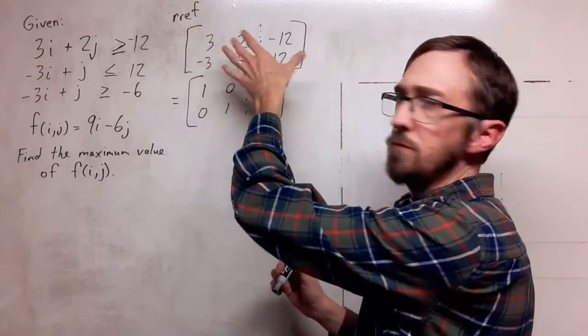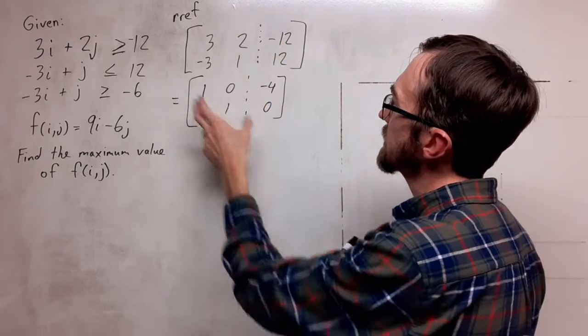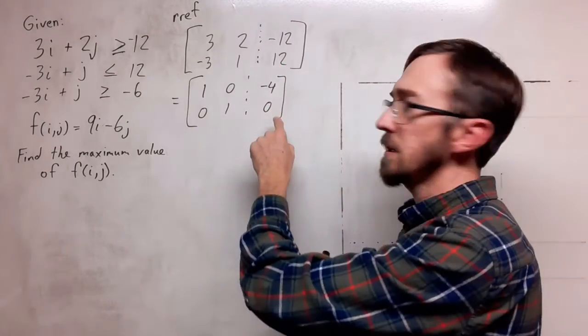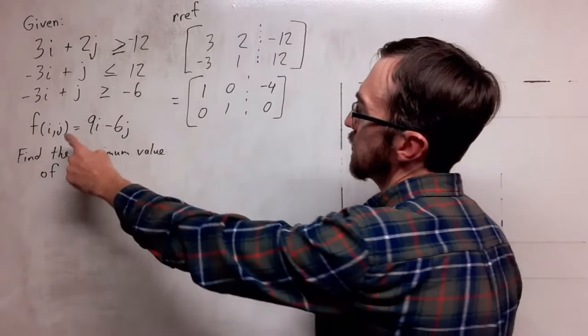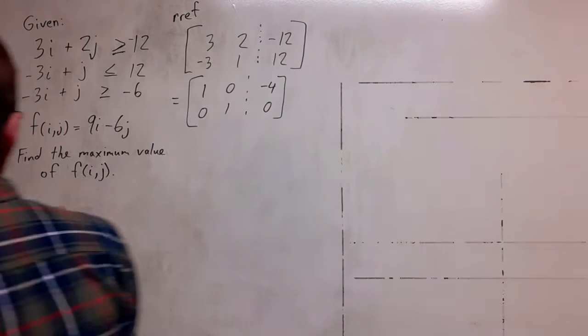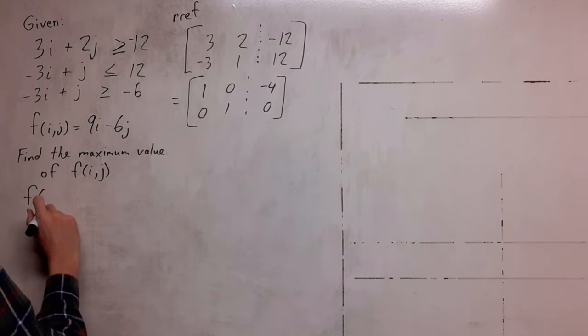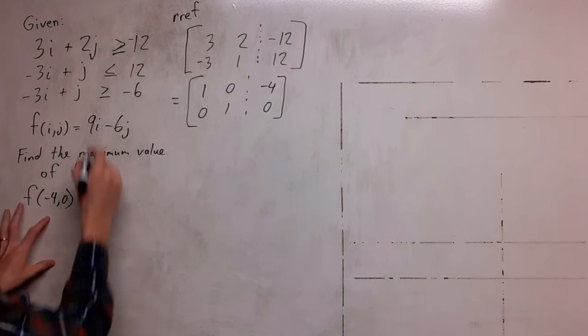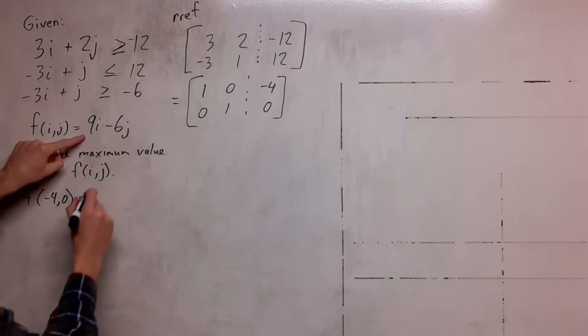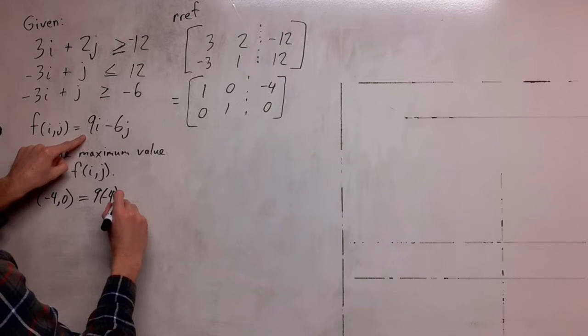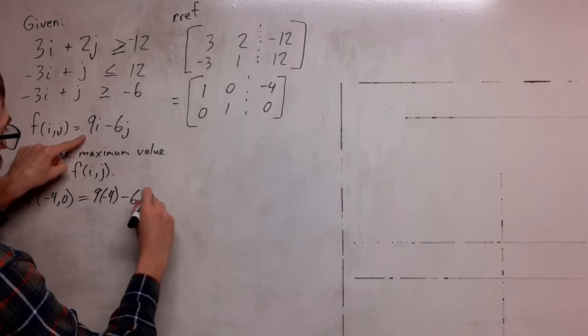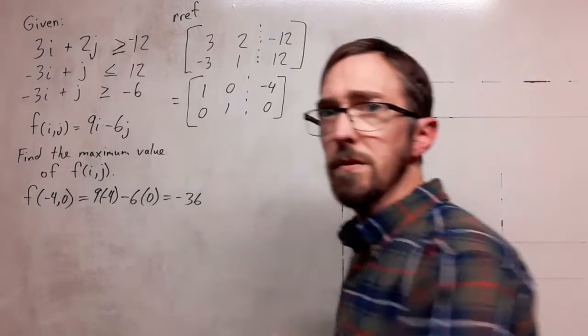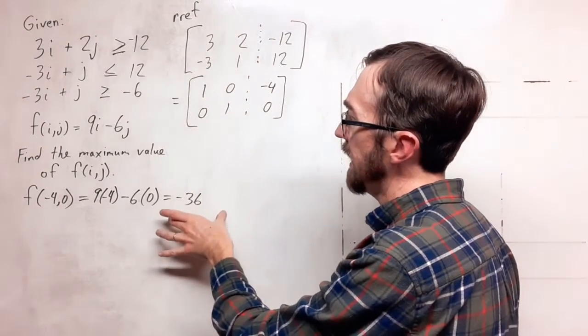Doing reduced row echelon form on this augmented matrix, I get the expected identity on the left and these numbers on the right. So this is my i and my j term that I will plug into this function. I'll have 9 times negative 4 minus 6 times 0, which will give me negative 36.